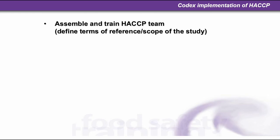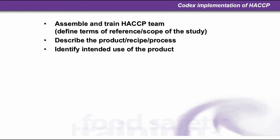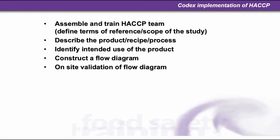The Codex implementation of HACCP comes in 12 steps. First, you need to assemble and train the HACCP team. The team needs to define the terms of reference and the scope of the study, describe the product, recipe, and process, and identify the intended use of the product. Then construct a flow diagram and carry out an on-site validation of the flow diagram — in other words, walk the talk. That's what validation means in the context of HACCP.